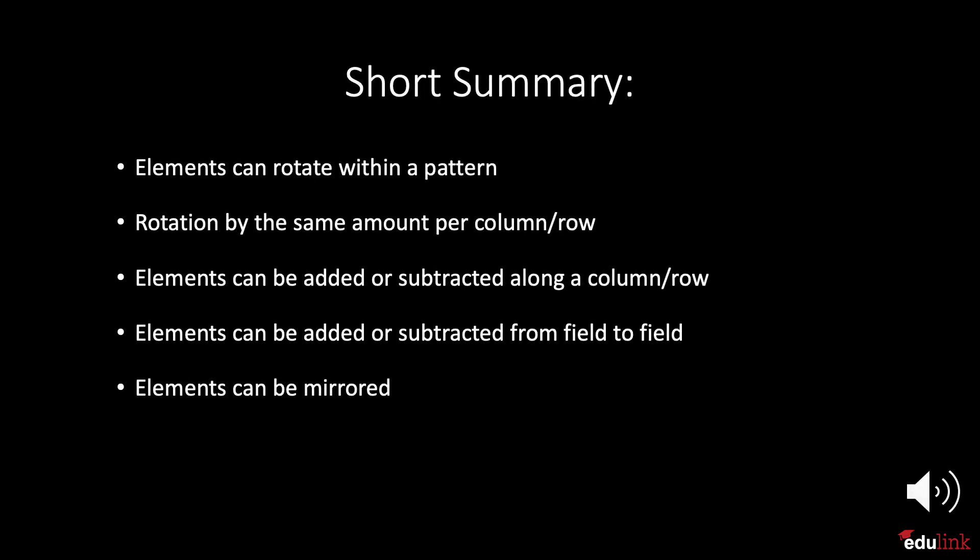Here is a brief summary of the key aspects we looked at. We have seen that elements can rotate within a pattern, and that they can rotate with the same amount per column or row. We have considered patterns that are added or subtracted along a row or column. We also saw that the elements from the second or middle field can either be added to or subtracted from the items in the first box to the left. And, as seen in the last example, elements can also be mirrored.